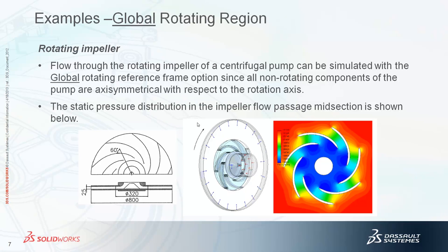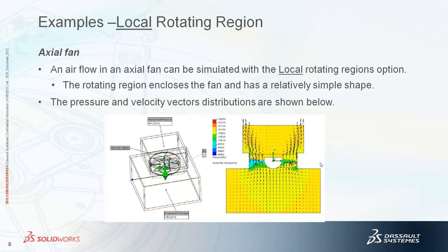The global rotating case shows a typical pump simulated with the global rotating reference frame option. Since all non-rotating components of the pump are symmetric with respect to the rotating axis, the static pressure distribution can be computed. This gives a more detailed description of the global rotating axis. In the axial fan condition, environmental boundary conditions at top and bottom have the same values — very typical of a rotating flow problem.